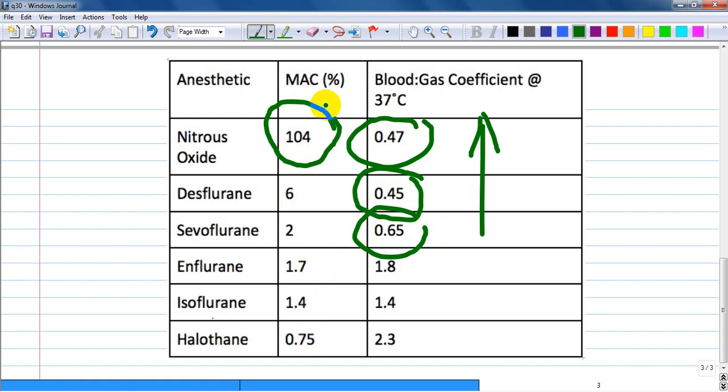This means that minimal alveolar concentration is required to be high to induce patients in anesthesia and needs a higher dosage. Hope you enjoyed this video and understand clearly why the options are correct. See you in the next video.